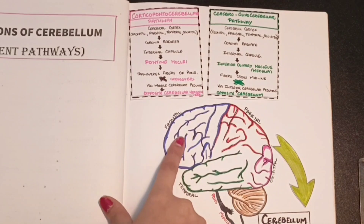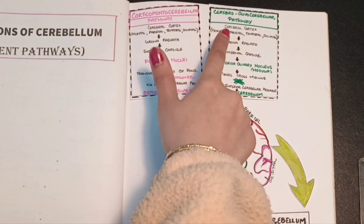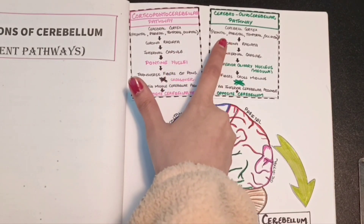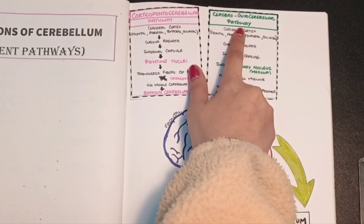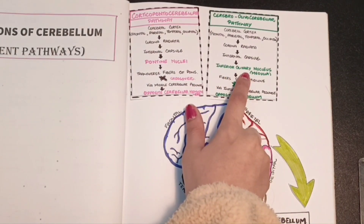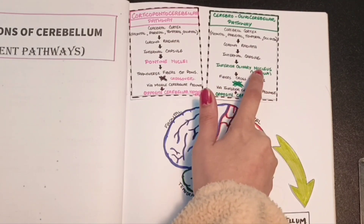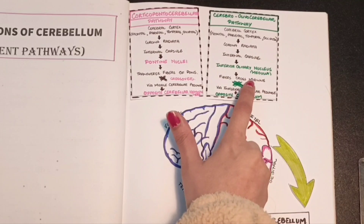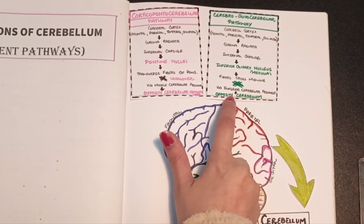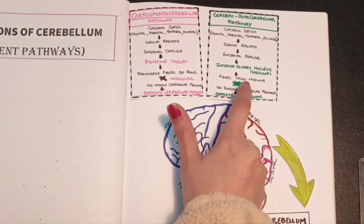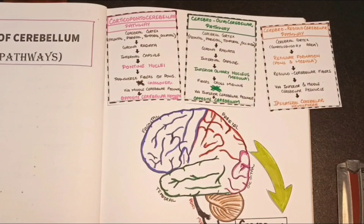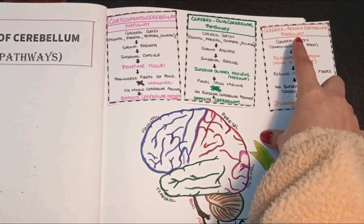The second pathway sending information from the cerebral cortex to the cerebellum is the cerebro-olivo-cerebellar pathway. This pathway starts in a very similar fashion to the corticopontocerebellar pathway, from the frontal, parietal, temporal, and occipital lobes. The fibers descend via the corona radiata and internal capsule, finally reaching the medulla where they synapse with the inferior olivary nucleus neurons. The axons then cross the midline and the medulla is connected to the cerebellum via the inferior cerebellar peduncle, so the fibers reach the opposite cerebellar hemisphere as a result of this crossing over.